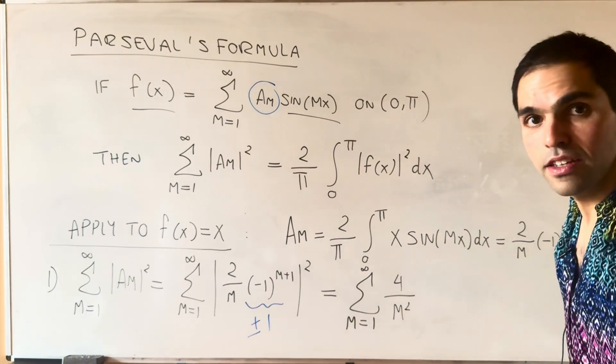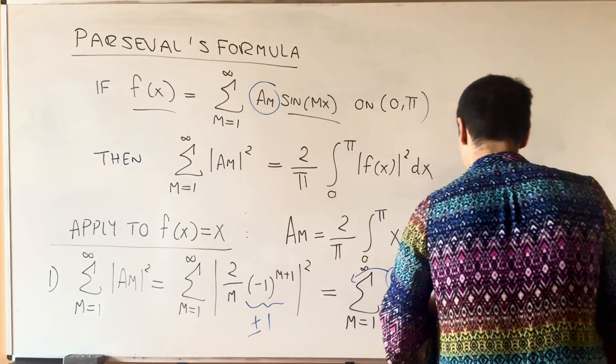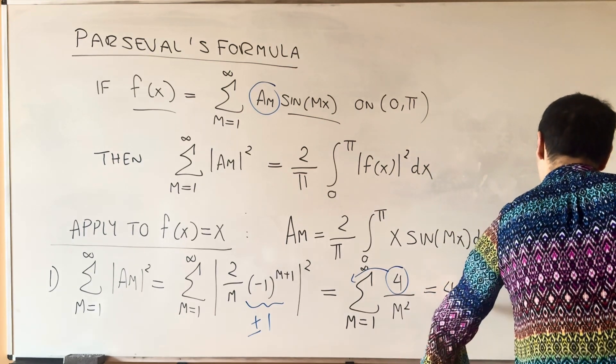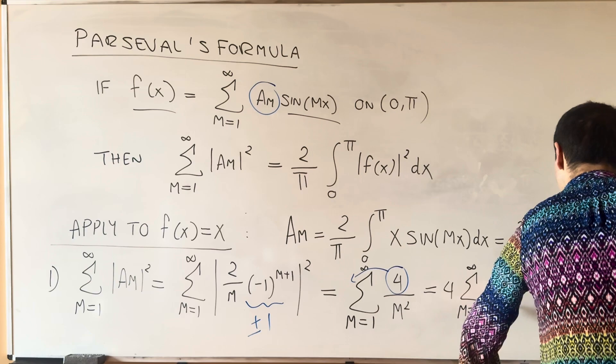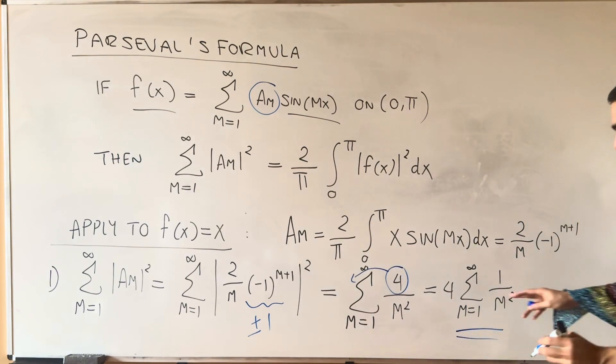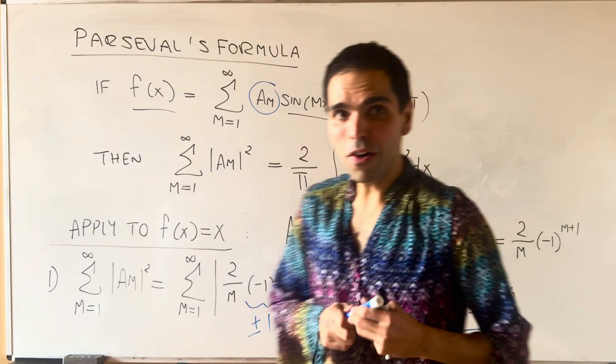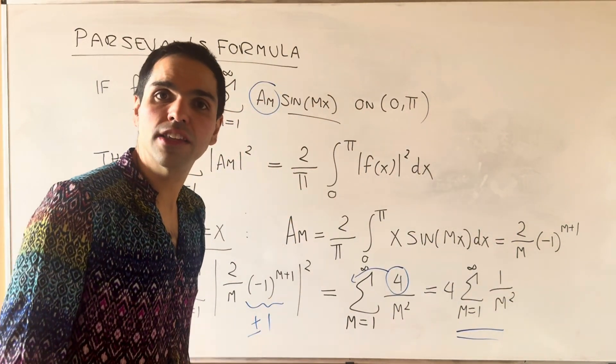And the cool thing is, this 4 comes out, and we're left with 4 times the sum from 1 to infinity of 1 over m squared, which is precisely what we want, by the way. So that's part of the sum, and then all we need to do now is evaluate the right-hand side.